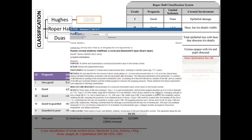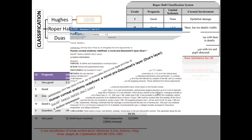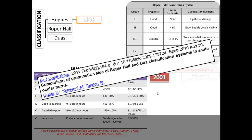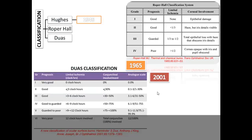The publication on the pre-Descemet's layer appeared around 2011–2013, and studies comparing Dua's and Roper Hall's classifications began from 2009 to 2011. These studies stated that Dua's classification has much more clinical significance than Roper Hall's classification.